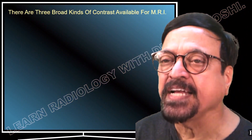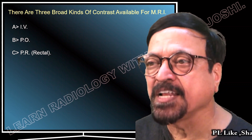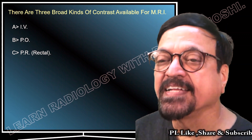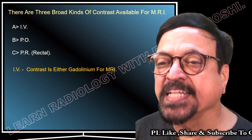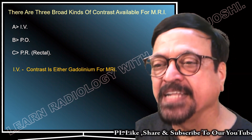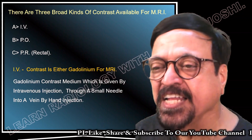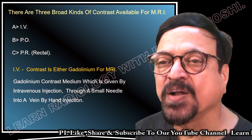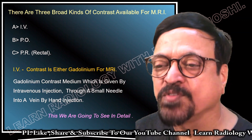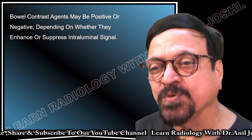There are three broad kinds of contrast available for MRI: intravenous (IV), oral, and per-rectal. Usually, when we refer to MRI contrast, we mean IV contrast — specifically IV gadolinium, a gadolinium contrast medium given by intravenous injection through a small needle into a vein. We will now look at its effects and whether other types are used or required.